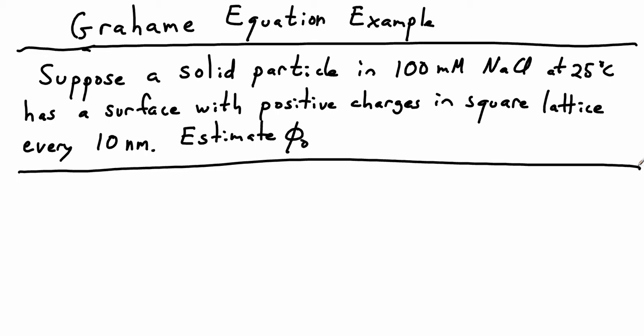Let's do an example using the Graham equation. The question tells us about a solid, and it looks like there's a grid of charges on that solid. We can draw something like this where there's a square lattice of charges on the surface.